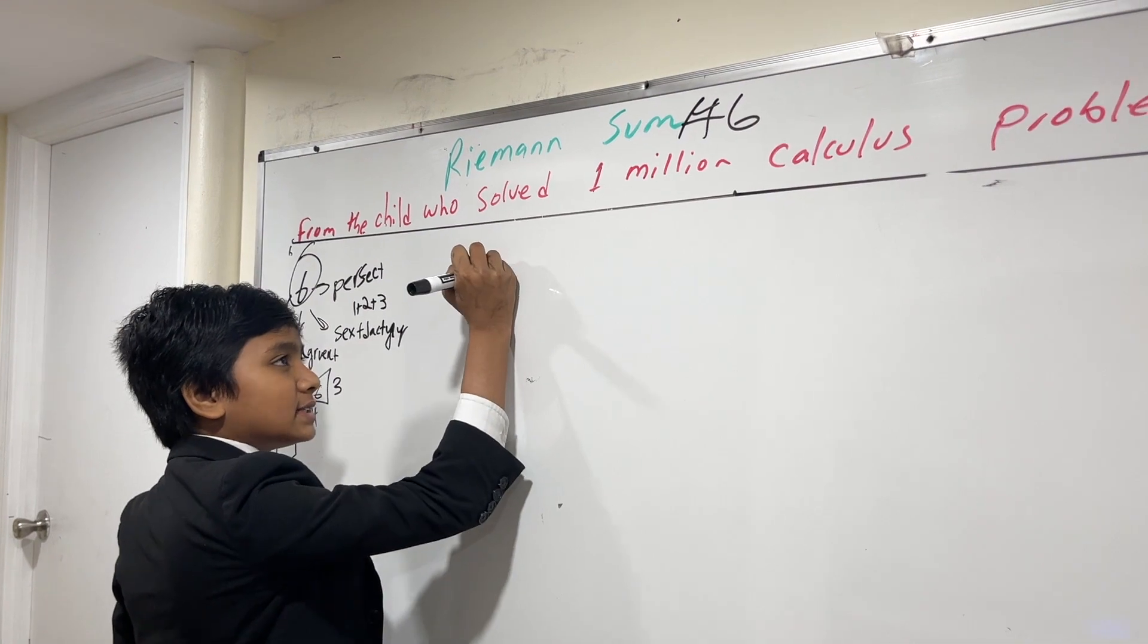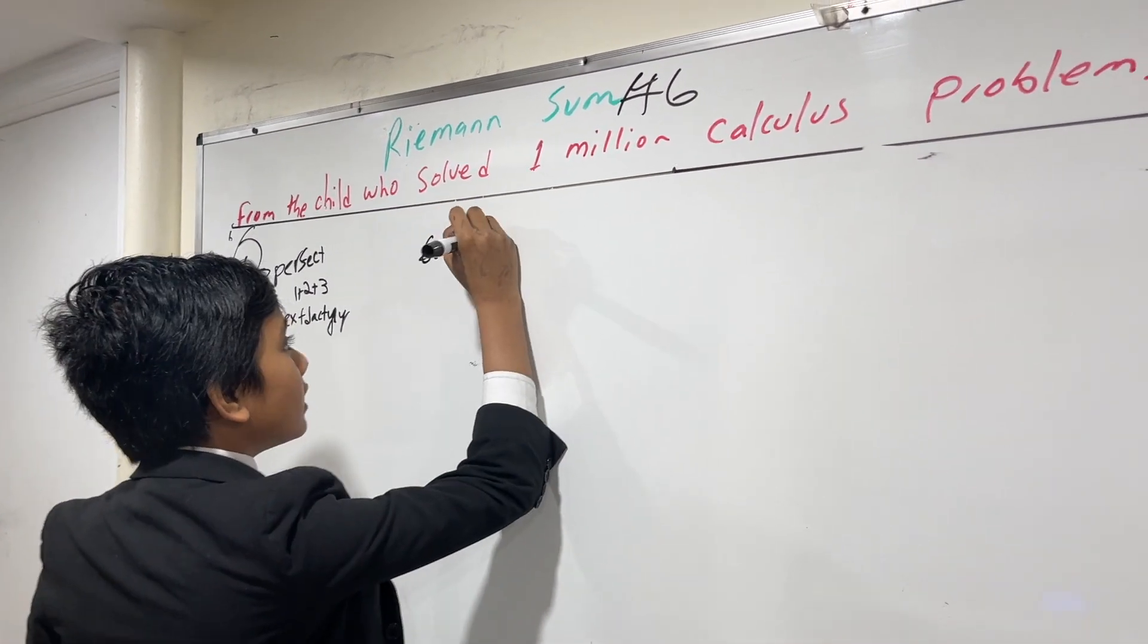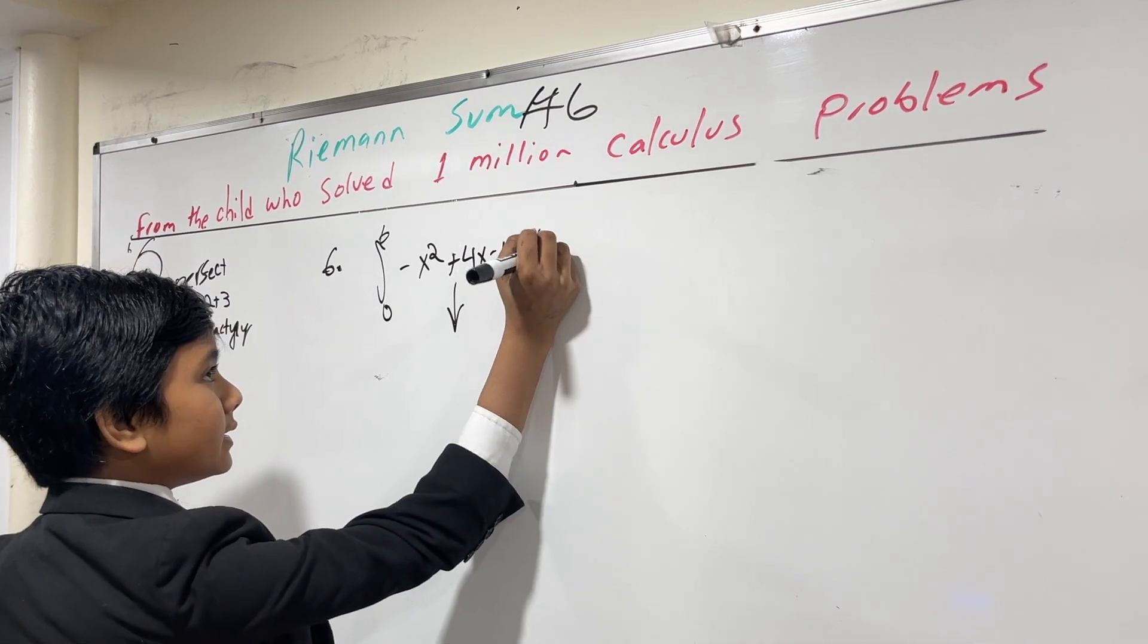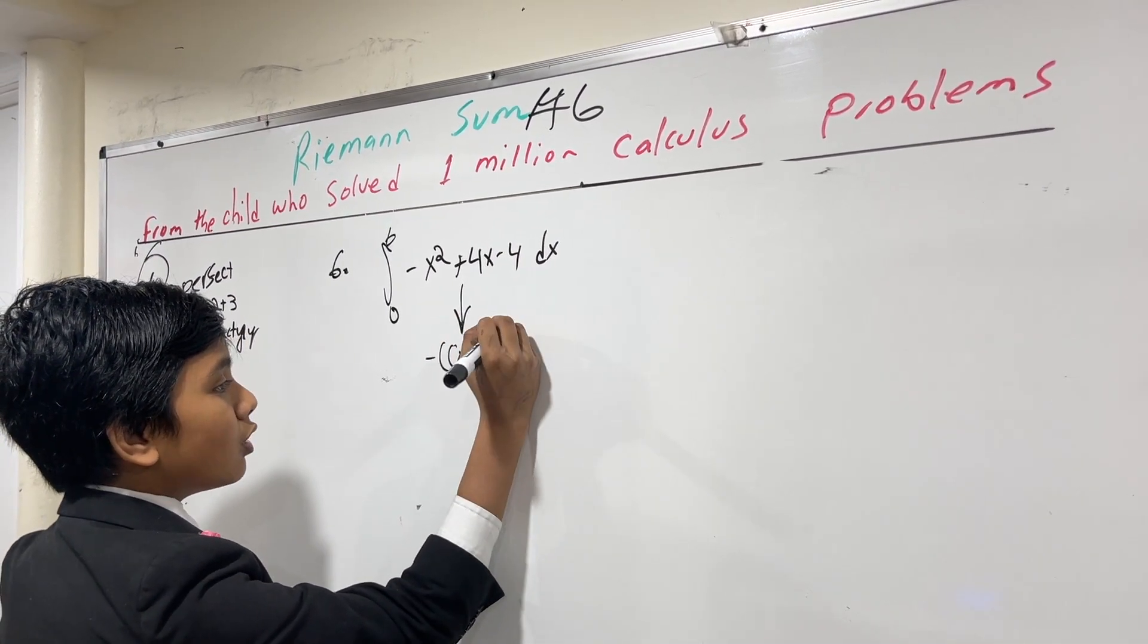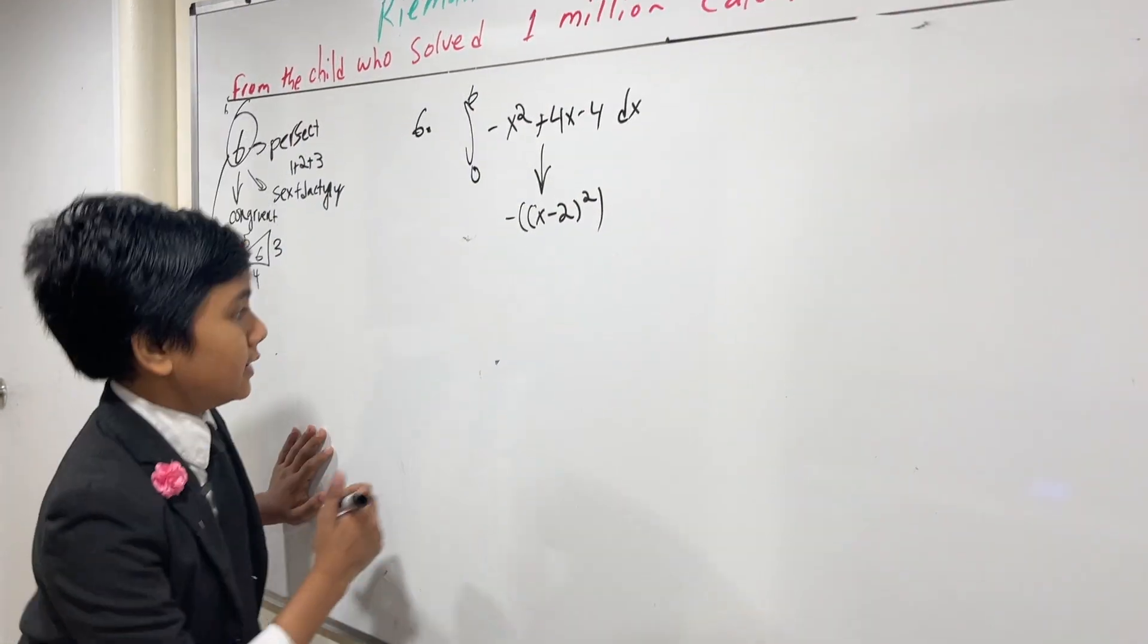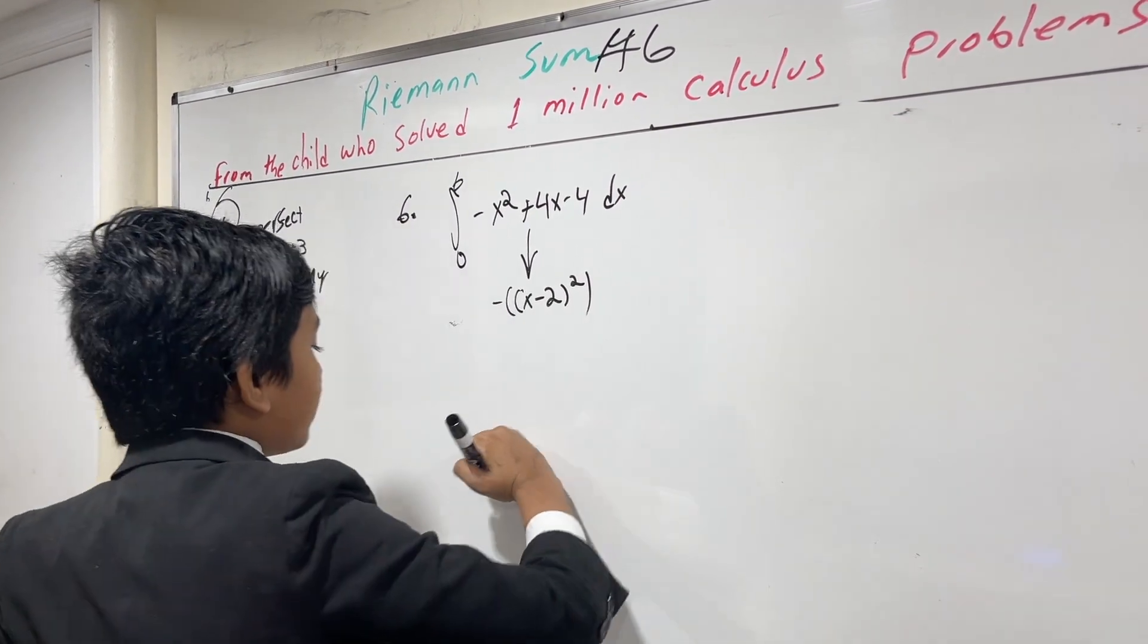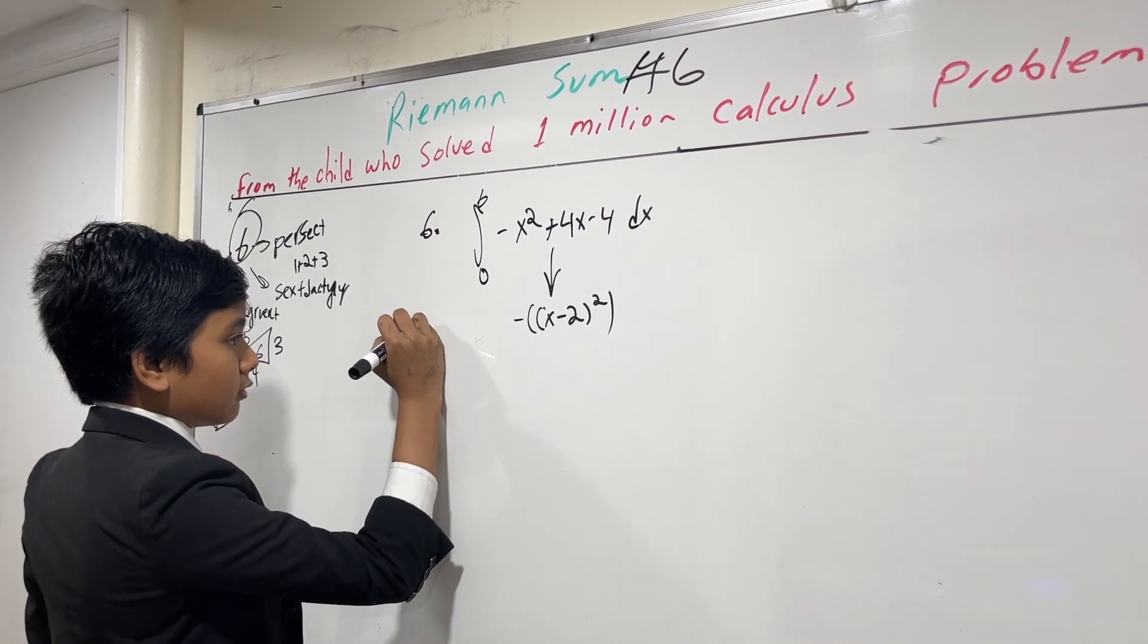Now let's do number six. Let's do this super fast. So, six. We've got 6 - x² + 4x - 4. You might notice this is literally just minus (x - 2)². Let's stack the... with the trapezoid sums. So, let's draw that real quick.